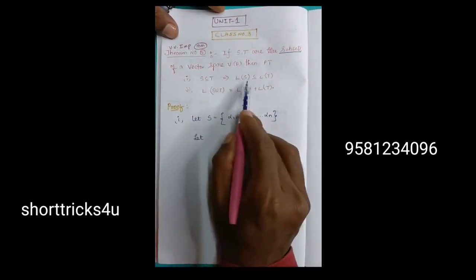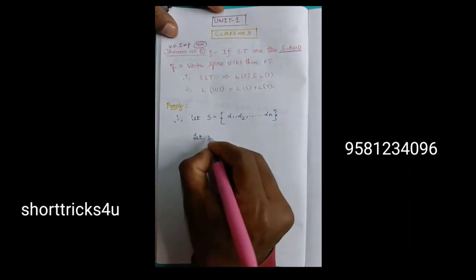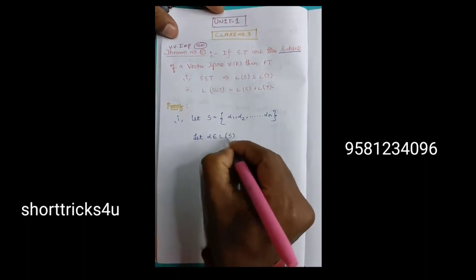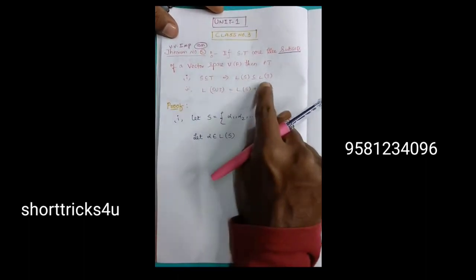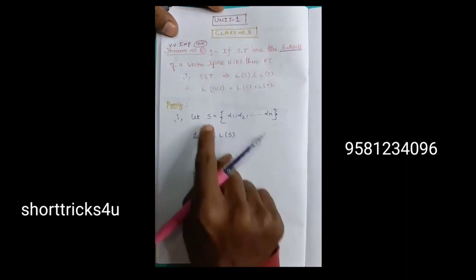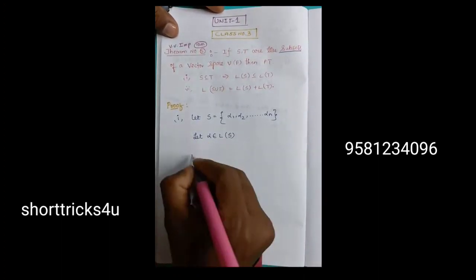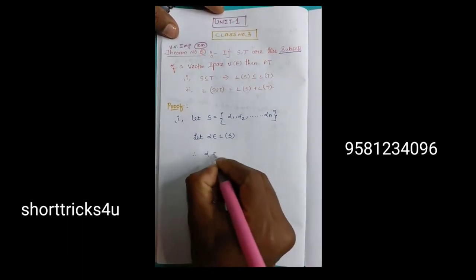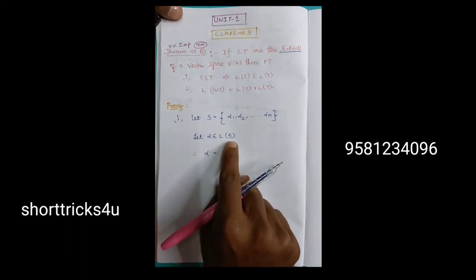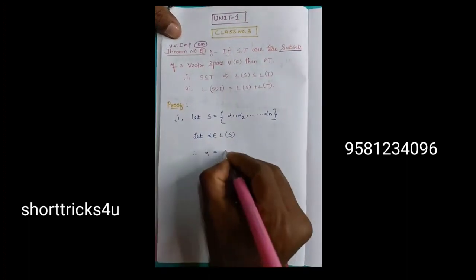First, how to prove this? I will take an element. Alpha belongs to L of S. If we have this alpha, it will take an element. This is S. Then we have a linear span. What is L of S? Alpha is a linear combination — at least one linear combination.